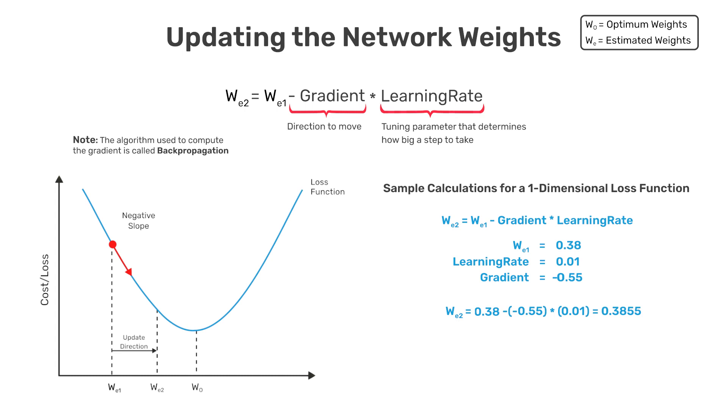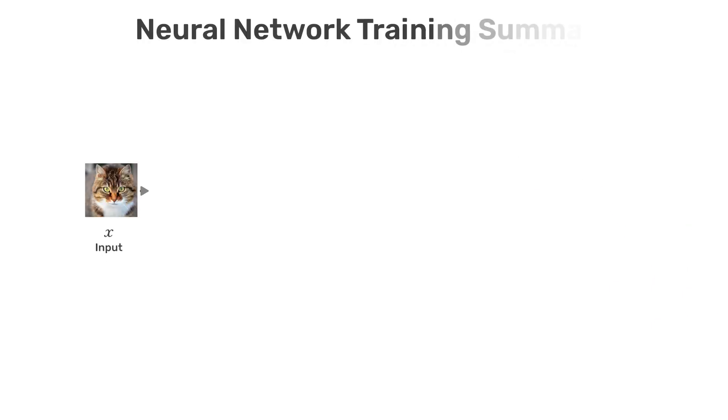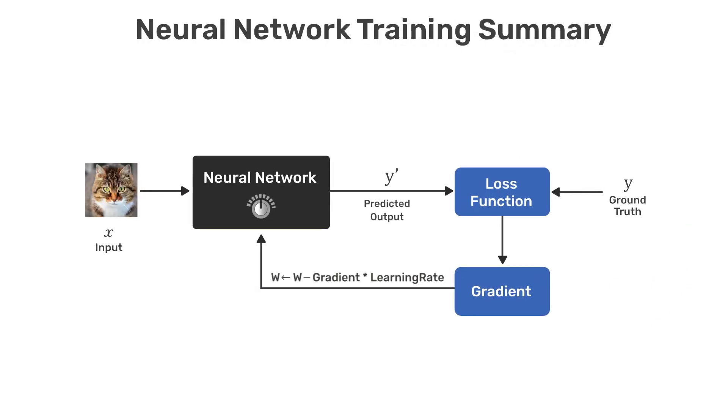Now that we've covered all the essential elements associated with training a neural network, we can summarize the process in the following diagram. Here you can see that we have an input image on the left and the output from the neural network on the right, which we refer to as Y prime.